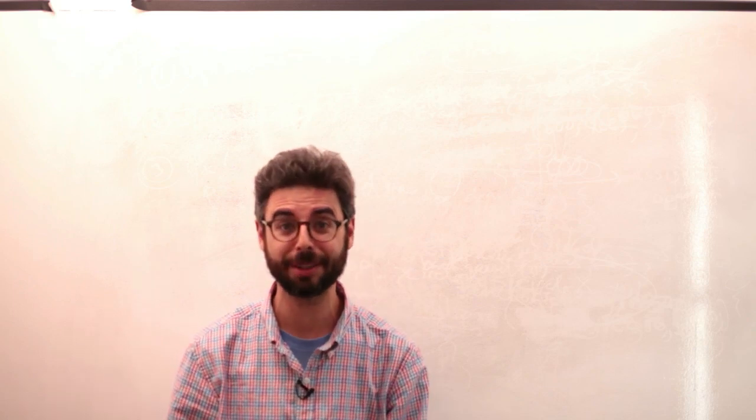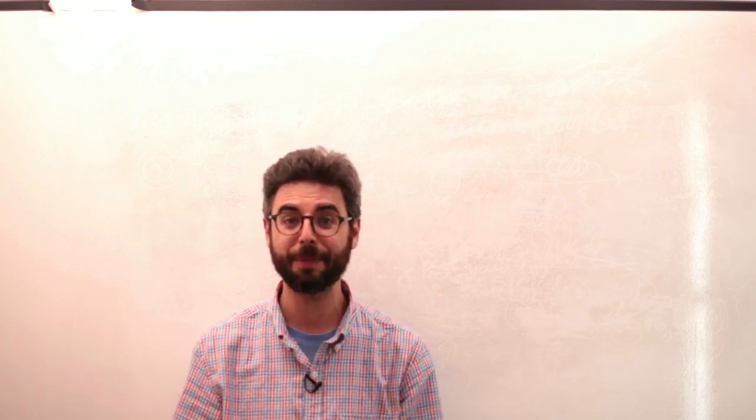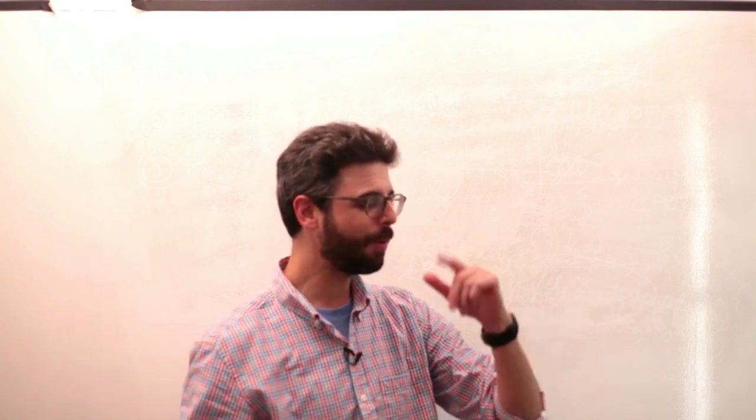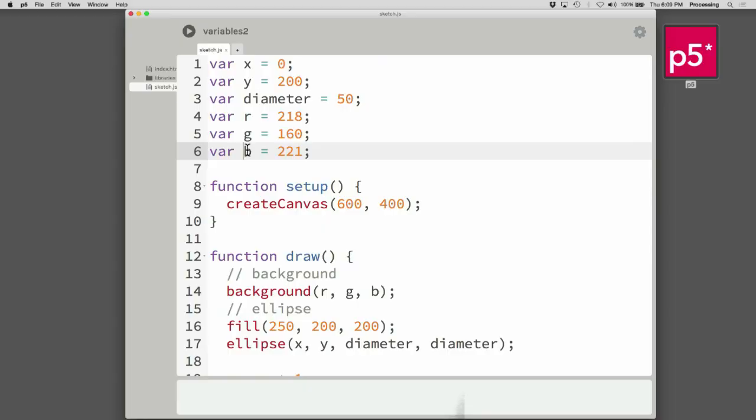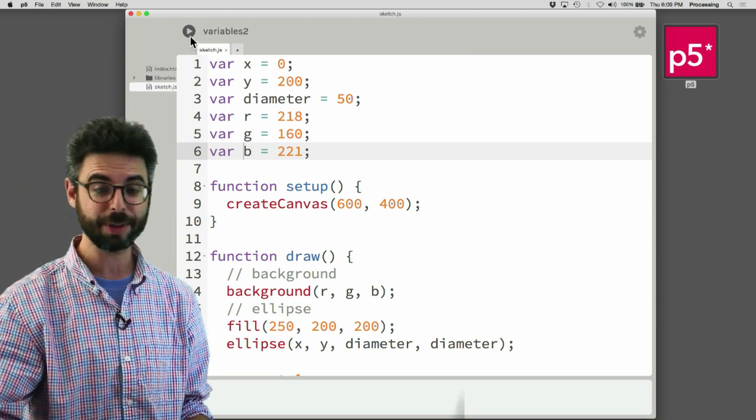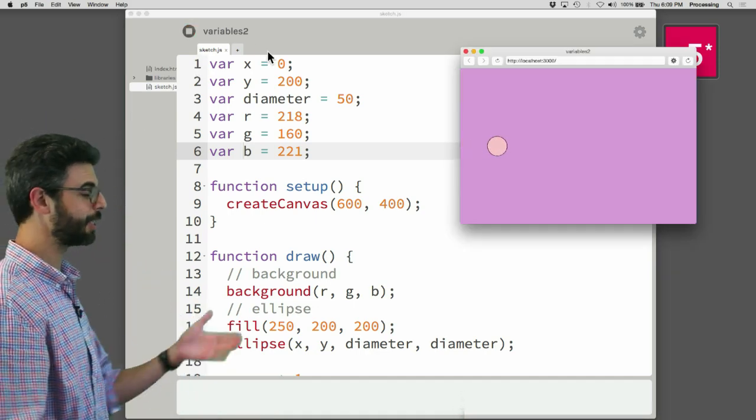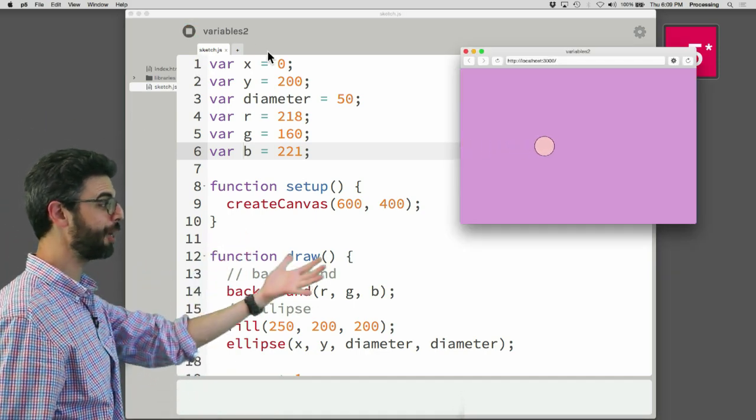So hopefully by now you've played a little bit with variables in P5. Maybe you used mouseX, mouseY. You made up some of your own variables. And I want to look actually at an example. This example is just like the one I made previously where I have a circle that's just moving across the screen.